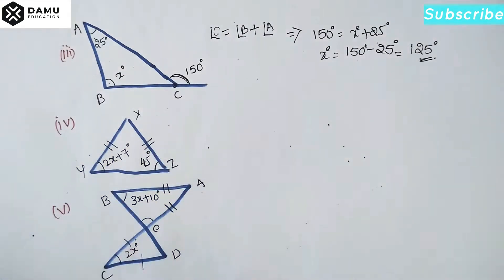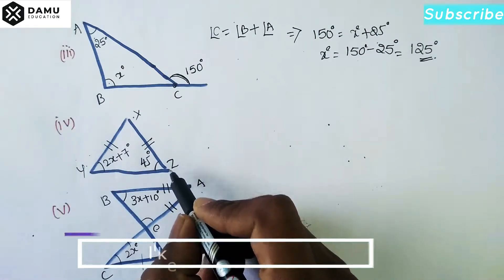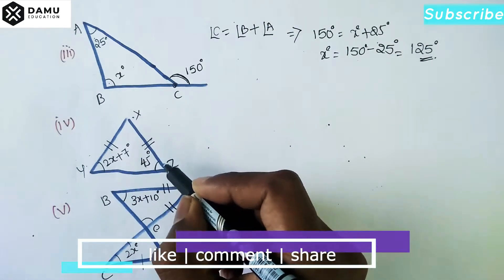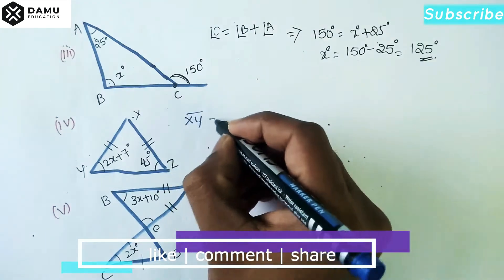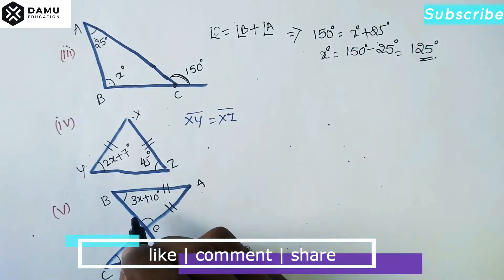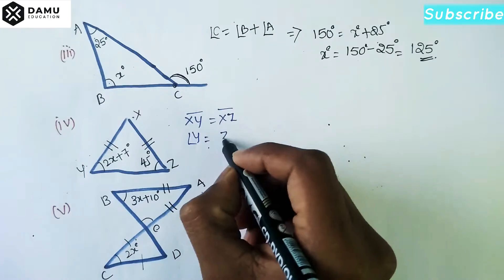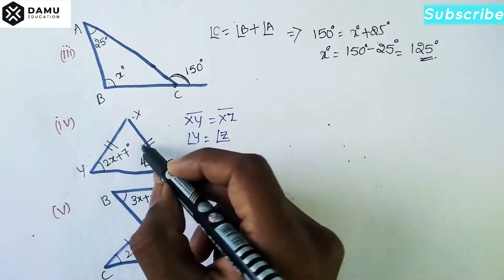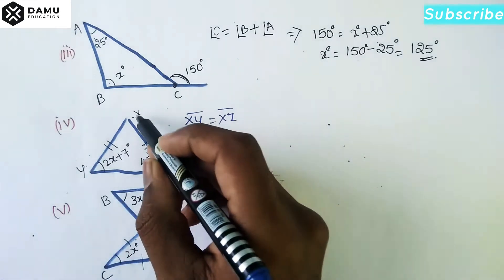Next, the second one: in triangle XYZ, two sides are marked equal — XY is equal to XZ. That means if two sides are equal, the opposite angles are also equal. For XY the opposite angle is Z, and for XZ the opposite angle is Y.